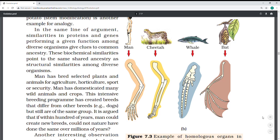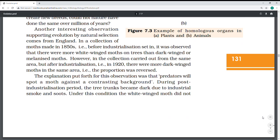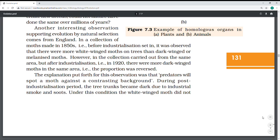It is argued that if for hundreds of years man could create new breeds, could not nature have done the same over millions of years? Industrial melanism and long-necked giraffe - the giraffe started eating the leaves at higher levels, slowly, slowly the neck has changed. Chemical evolution has started that.